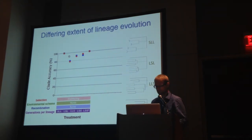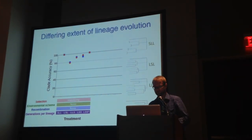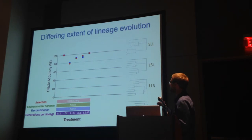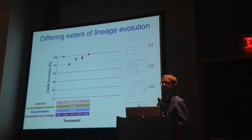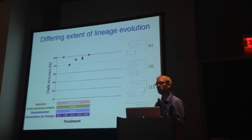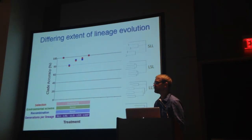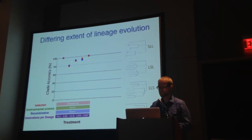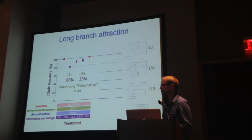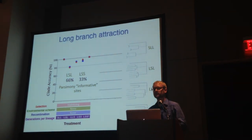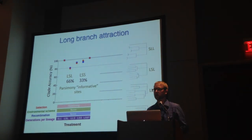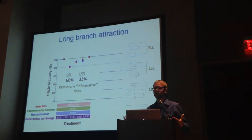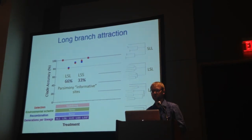Here's what that data looks like. When we have long external branches and long internal branches — especially when those long internal branches are deeper in the tree — we're having a harder time inferring the correct tree topology. This is essentially due to long-branch attraction throughout the tree, exemplified by the percent of parsimony informative sites: a really high parsimony informative site value, but they're almost all homoplasious.